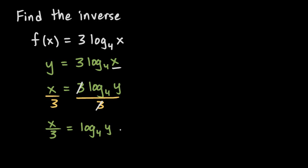Now we need to solve this for y. This log base 4 of y — remember, the y here is inside this log. This isn't log 4 times y; this is the log base 4 of y. So the y is inside the base-4 log. The question we ask is: how do we get rid of a base-4 log? In order to algebraically isolate y, we use a base-4 exponent.